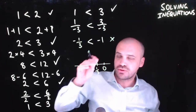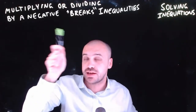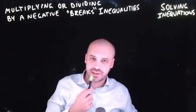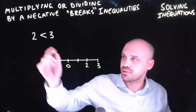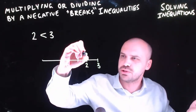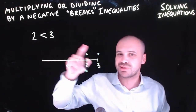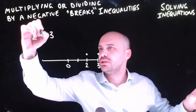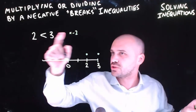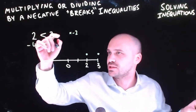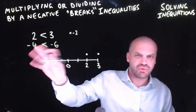So there were two things that broke the inequality: multiplying or dividing by a negative breaks inequalities. Why does this happen? We've got 2 is less than 3. If we multiply both by negative 2, we get negative 4 is less than negative 6 — that's broken.